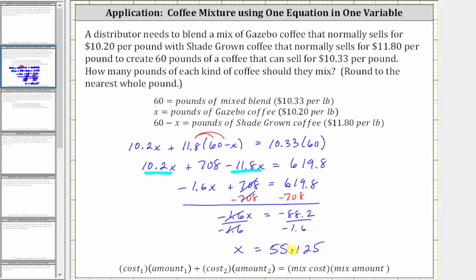So 55.125 is the exact number of pounds of gazebo coffee needed to make the desired mix. But notice the directions say to round to the nearest whole number — the ones place value. We have a 5 in the ones place and a 1 in the tenths place, so we round down to 55. Therefore we will use x equals 55, or 55 pounds of gazebo coffee.